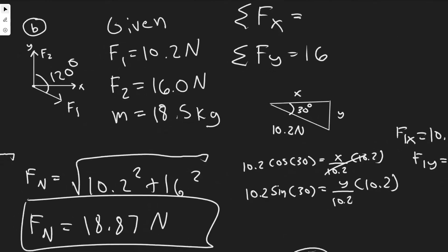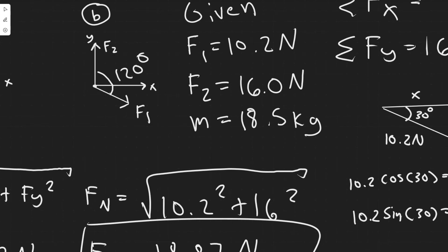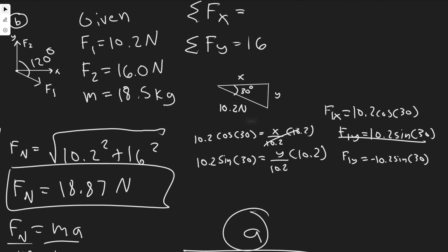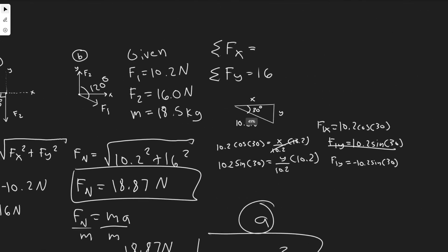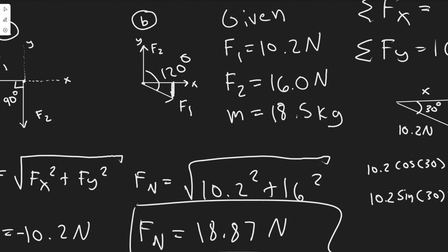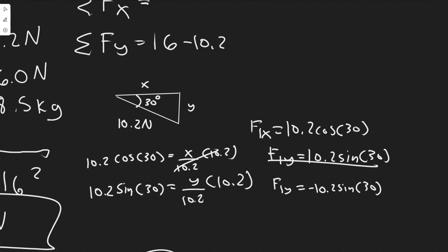Keep in mind the sign conventions: forces to the right and upward are positive, left and downward are negative. The x component of F1 goes to the right so it's positive, but the y component goes downward so F1y is actually negative 10.2 sine of 30. This matters because we're summing all forces in the y direction — F2 contributes positive 16 N and F1y contributes a negative value.